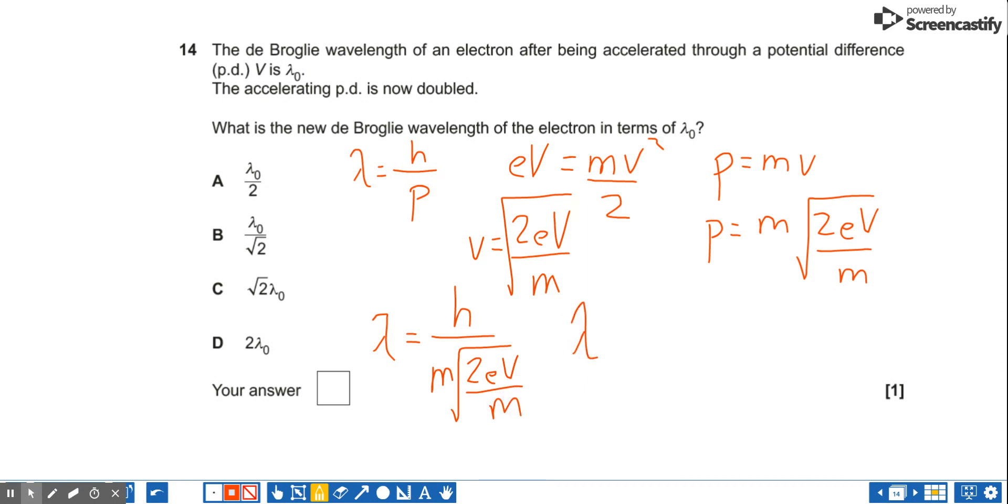So what I can say is that my wavelength is proportional to 1 over the square root of the accelerating voltage because H, m and E are constants. So if I double my voltage, I'm going to have 1 over 2 root.